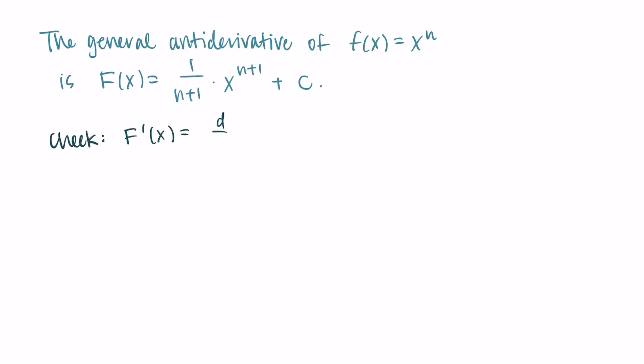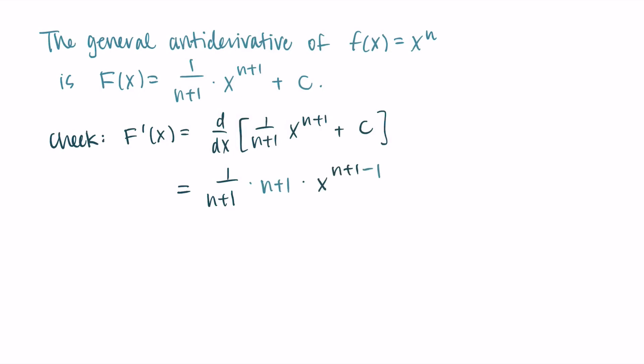Let's check that this works. Taking the derivative of big F, the n plus one comes down in front and we decrease the exponent by one, and the derivative of c is zero. So we have n plus one over n plus one times x to the n, and n plus one over n plus one cancel, leaving just x to the n. This confirms the rule works. One note: we can't use this when n equals negative one, since we'd divide by zero. And x to the negative one is one over x, which has its own antiderivative — natural log of x — since the derivative of natural log of x is one over x.